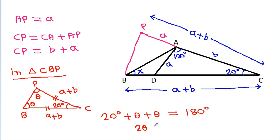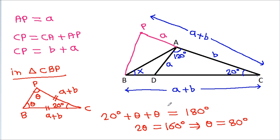So 2 theta equals 160 degrees, which means theta equals 80 degrees. So this angle is 80 degrees.